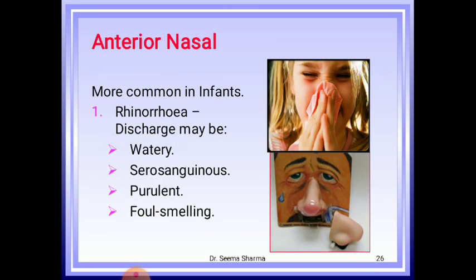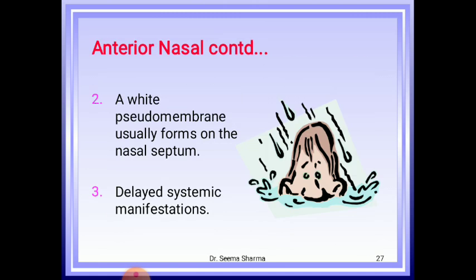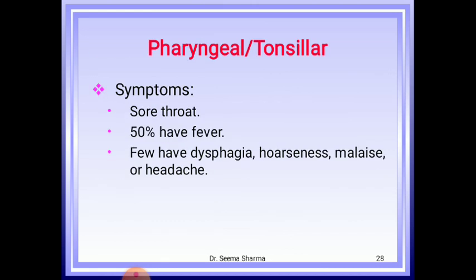Anterior nasal diphtheria is more common in infants. It presents with rhinorrhea — discharge from the nose — which may be watery, serosanguinous, purulent, or foul smelling. Serosanguinous means containing both blood and serum; for example, fluid exiting a wound that is yellowish with a small amount of blood. Purulent refers to white and thick secretions. A white pseudomembrane usually forms on the nasal septum, and there are delayed systemic manifestations.